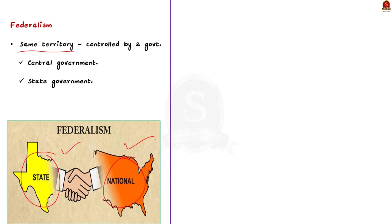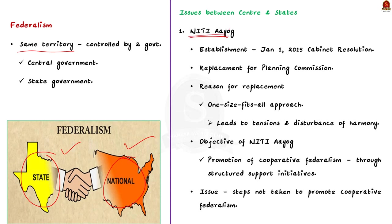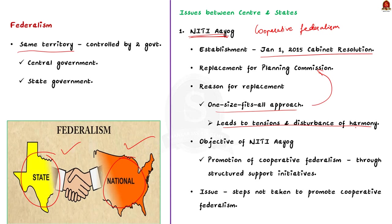With this basic understanding about federalism, let us see the issues present between the center and the states in India. The first issue is with respect to NITI Aayog. There was a widespread hope that NITI Aayog would aid in promoting cooperative federalism when it replaced the Planning Commission of India. But it wasn't to be. The cabinet resolution of January 1, 2015 constituted the National Institution for Transforming India, shortly known as NITI Aayog. It replaced the Planning Commission because the one-size-fits-all approach followed in central planning led to tensions between the center and the states. NITI Aayog's main mandate was to promote cooperative federalism.